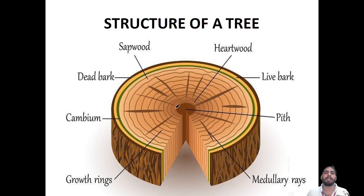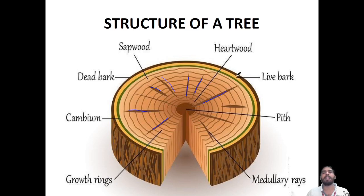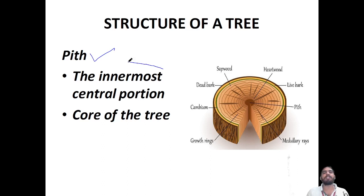Now we go directly to the structure of the tree. Looking at the cross-section, the parts include the cambium, live bark, and dead bark — there are two types of barks: live bark and dead bark. The innermost central portion of the tree is called the pith. These types of questions can be asked in public service examinations.